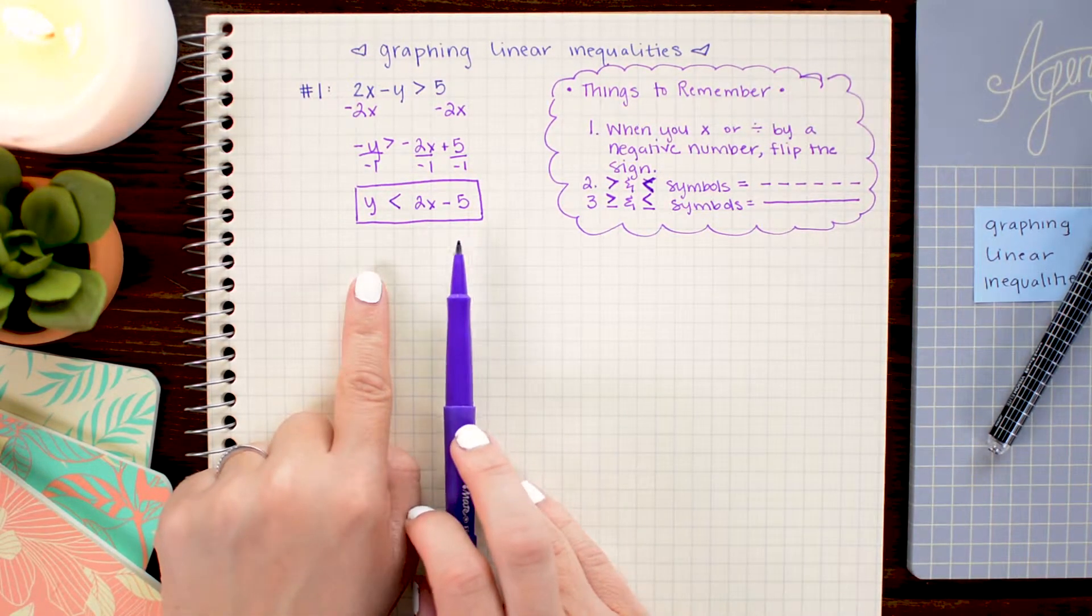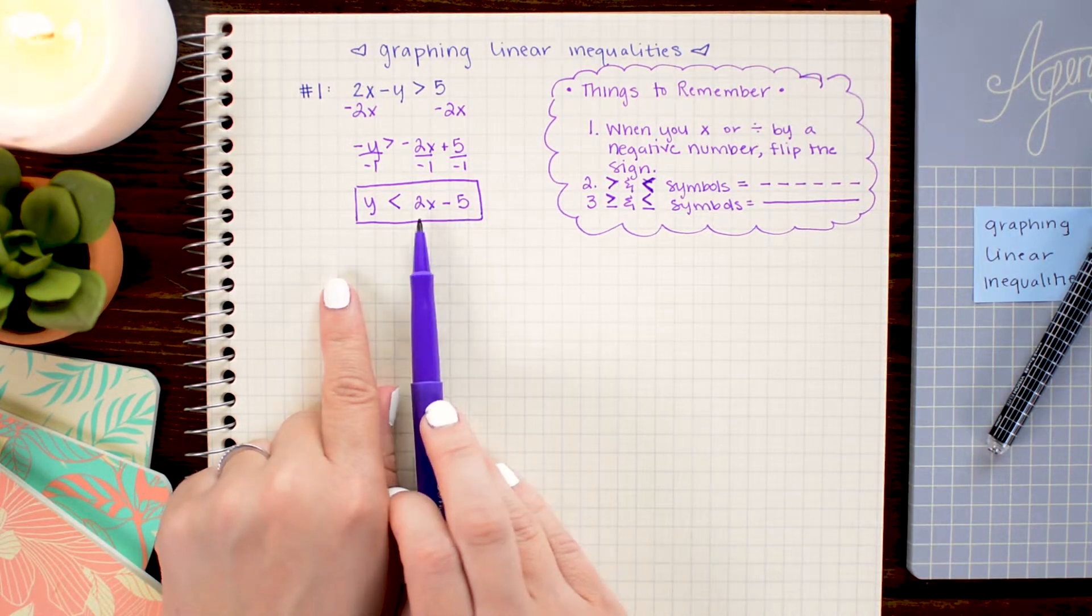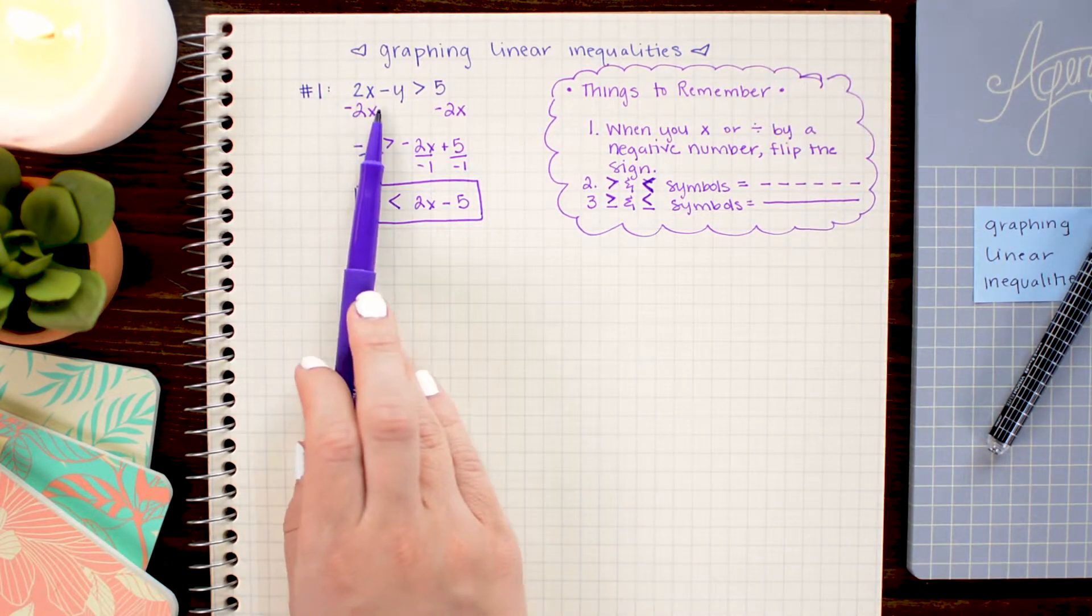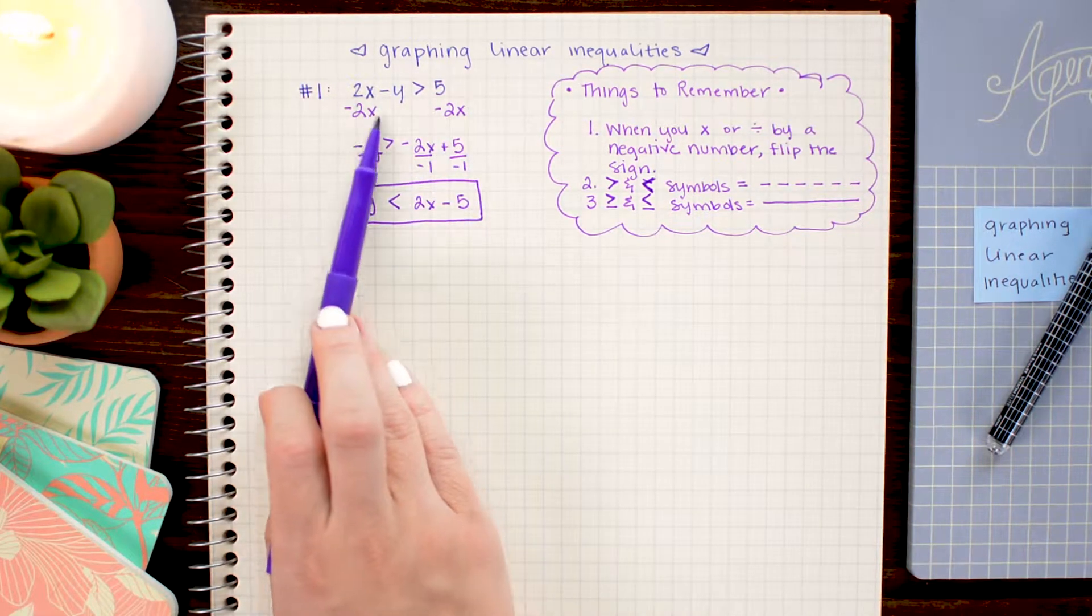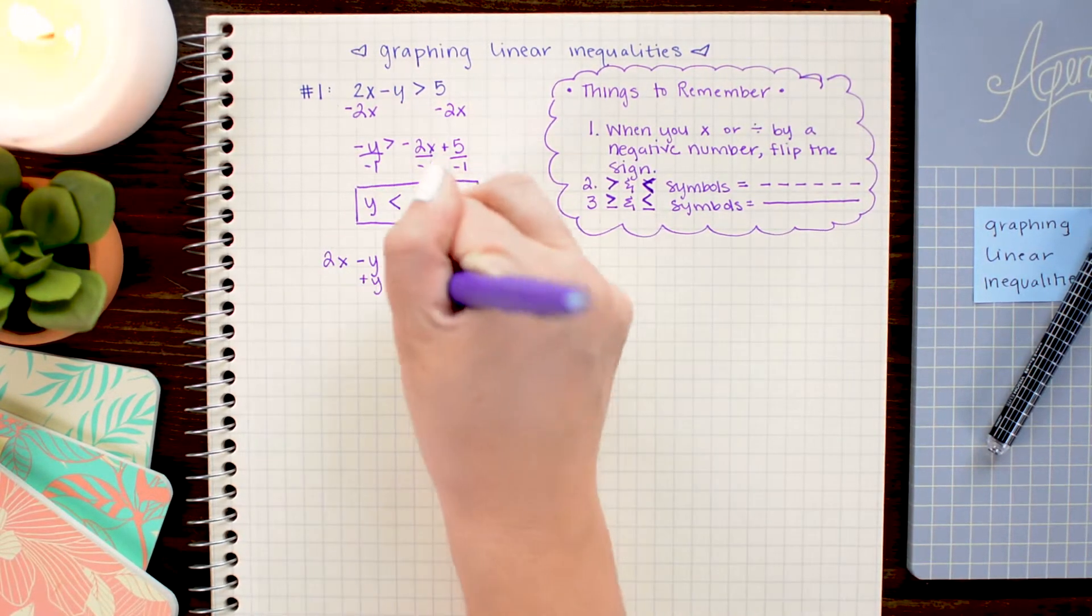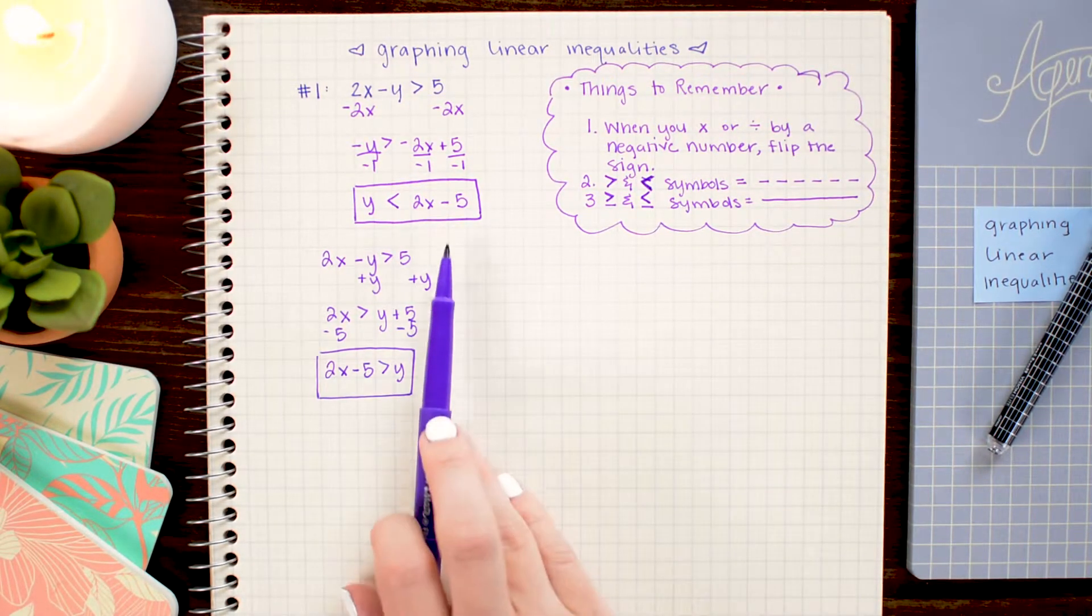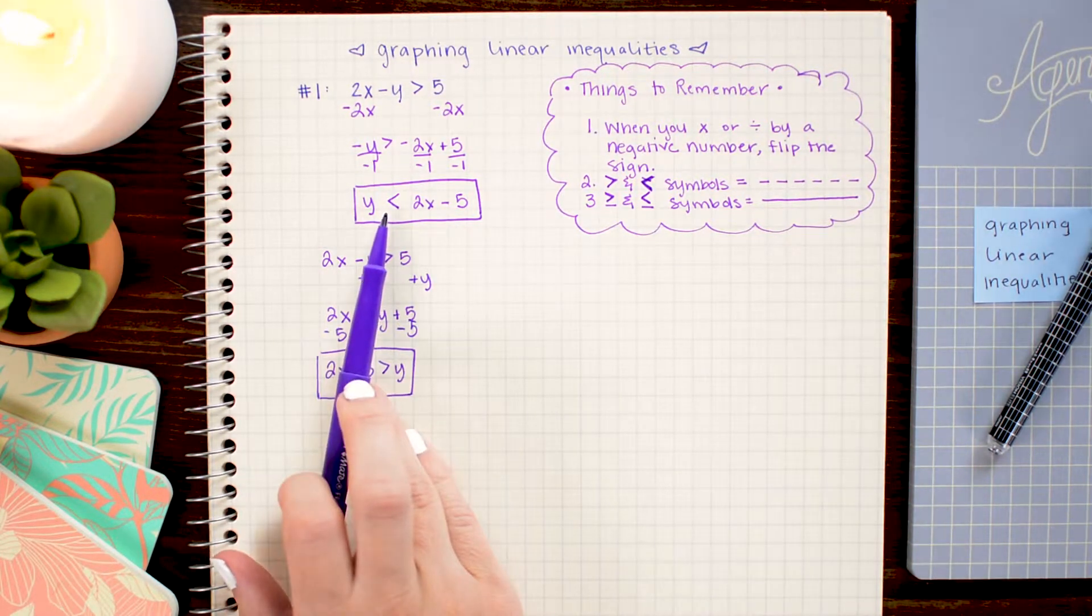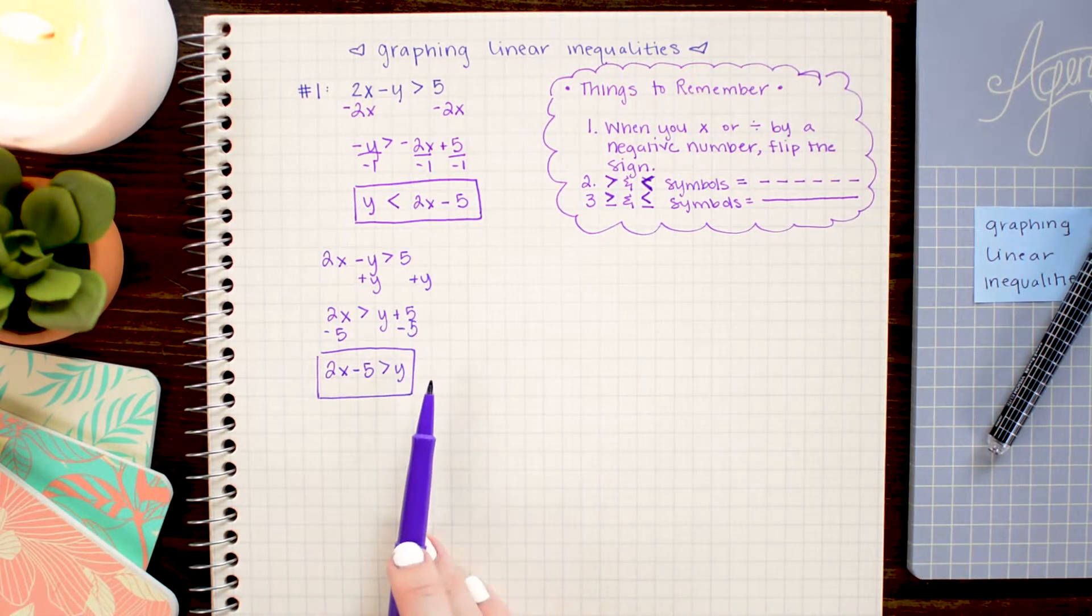So this gives us our equation that we're going to graph. It is going to be a line that crosses through the y-axis at negative 5 and has a slope of 2. Now, before I graph this, I just want to make a note. Let's say that we have this 2x minus y is greater than 5. And instead of subtracting the 2x over, I simply added the y over. Let's see what that would give us. So notice how these two equations are really the same equation. This is why we need to flip this symbol when we divide it by the negative number. It makes sure that everything stays consistent no matter how I go ahead trying to solve the problem.